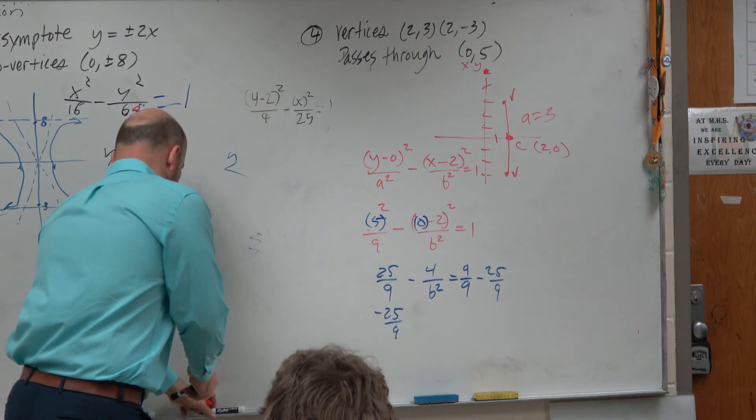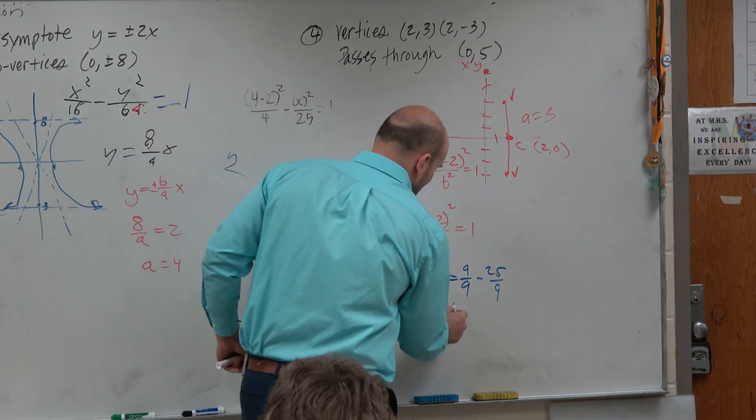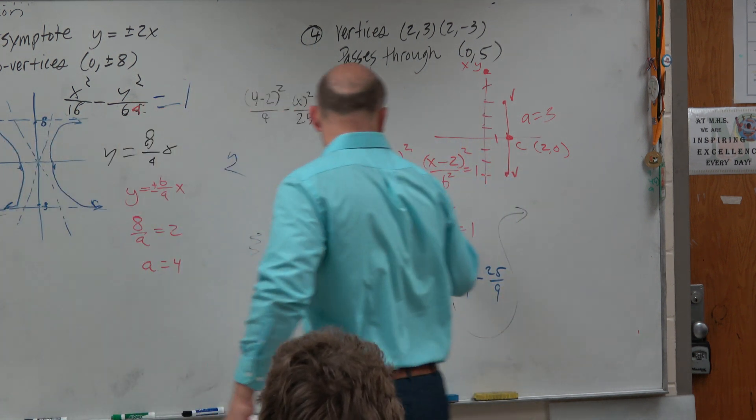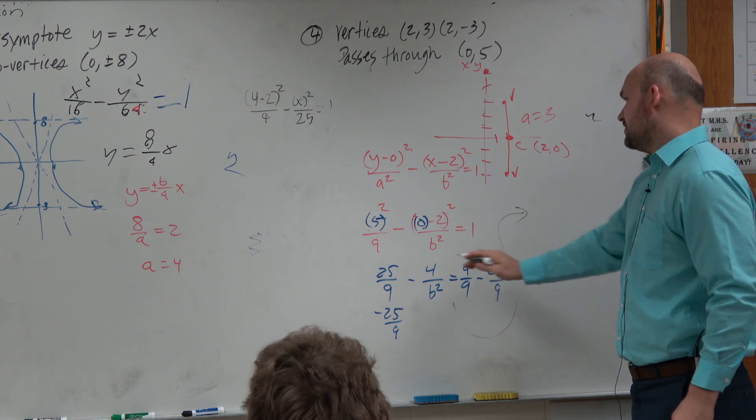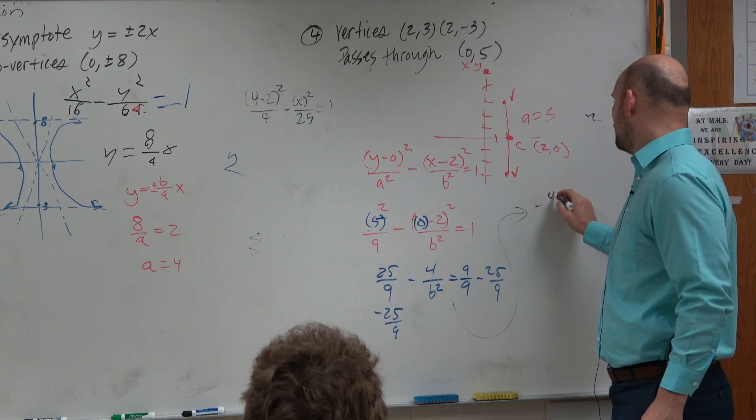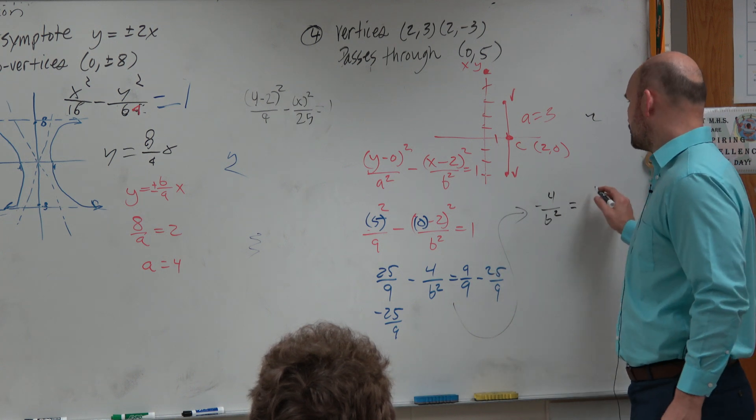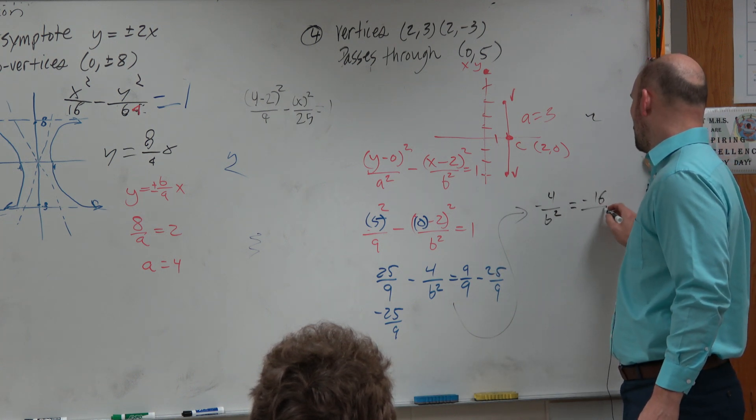Now, I did run out of space, so I'm going to do what I told you not to do and do a nice little line over here and say, I'm going to continue my work right there. Do I have any good markers left? So therefore, I'm left with a negative 4 over b squared equals 9 minus 25 is a negative 16 over 9.